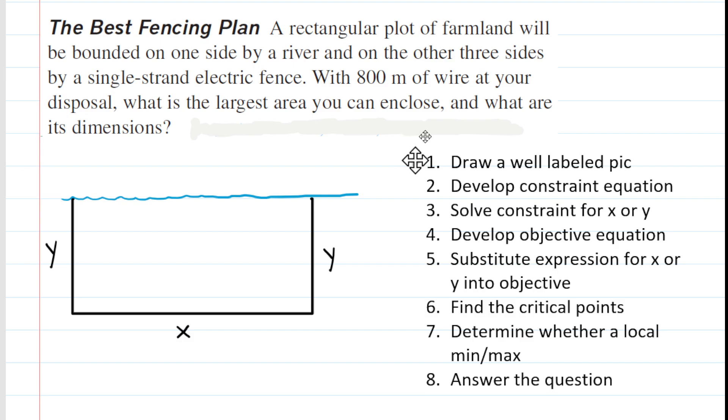In order to answer any optimization question, we're going to be following an eight-step procedure. In step one, we will draw a well-labeled picture. We have gone ahead and have done that already. Notice that because there is a river bordering one side of the farm plot, we don't have to label any fencing for that side. The river itself will account for one side of the fence. The other dimensions are labeled x and y.